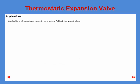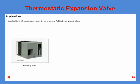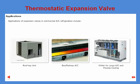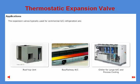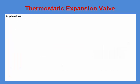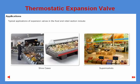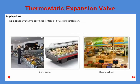Typical applications for expansion valves in the commercial AC section include AC rooftop units, bus or railway AC systems, and chillers for large AC systems and process cooling. The expansion valves typically used for commercial AC are T2 and TE2. For food retail applications — including fresh produce displays, sales counters for various foods, and reach-in cold rooms for dairy products — the expansion valves typically used are T2, TE2, and TU.